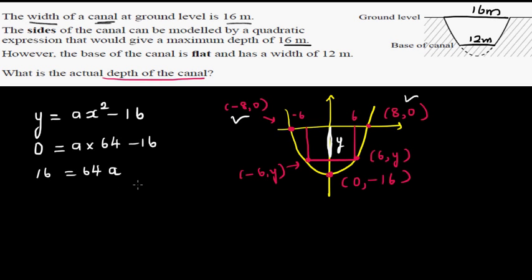Dividing both sides by 64, a is 16 divided by 64, which is a quarter, or that is 0.25.